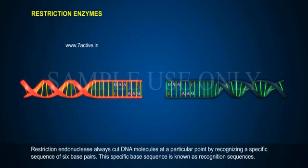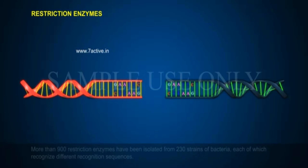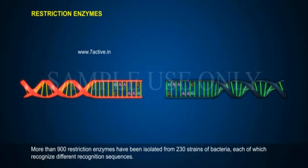Restriction Endonucleases always cut DNA molecules at a particular point by recognizing a specific sequence of six base pairs. This specific base sequence is known as the Recognition Sequence. More than 900 restriction enzymes have been isolated from 230 strains of bacteria, each of which recognizes different recognition sequences.